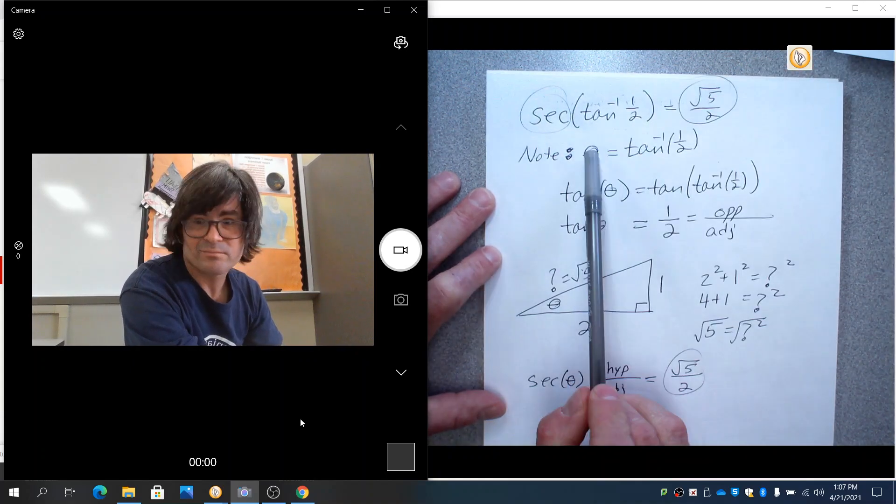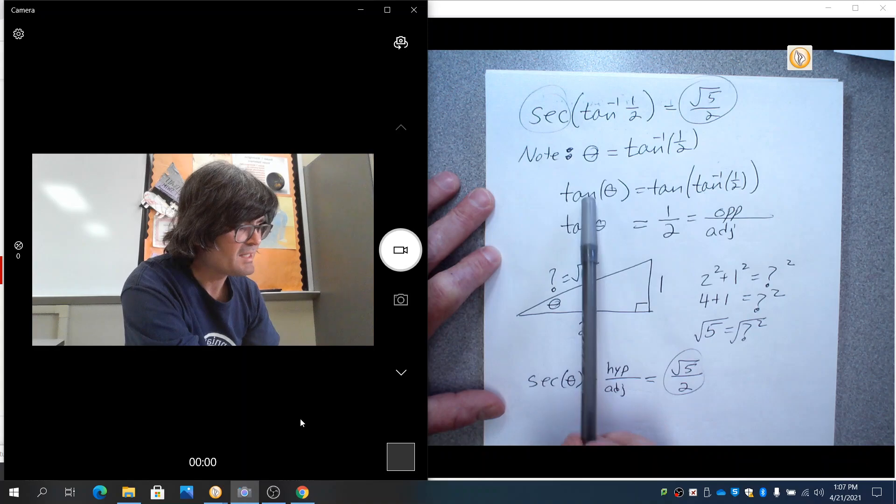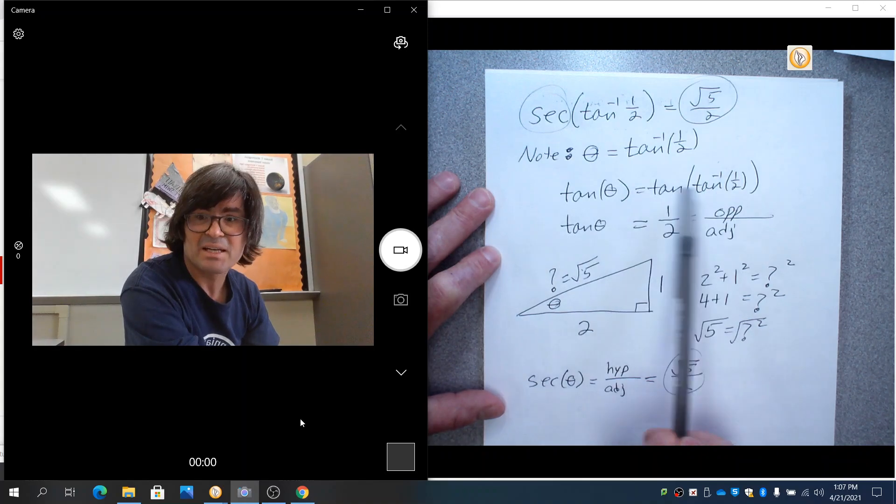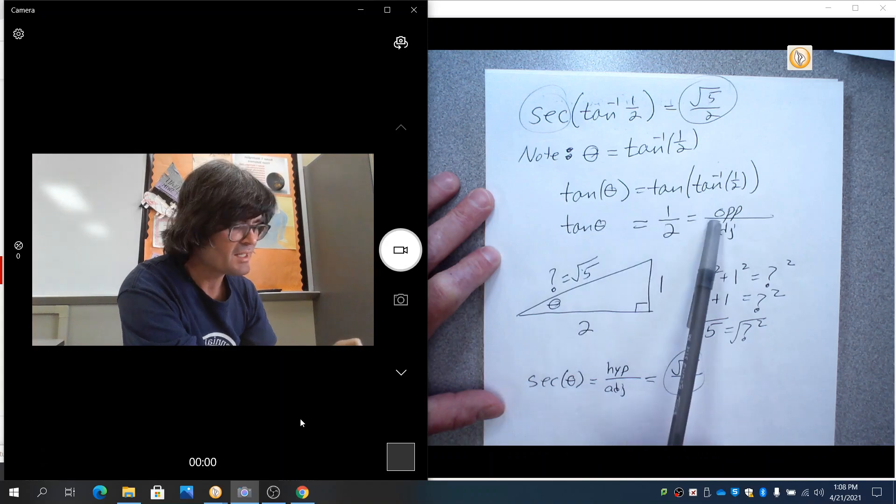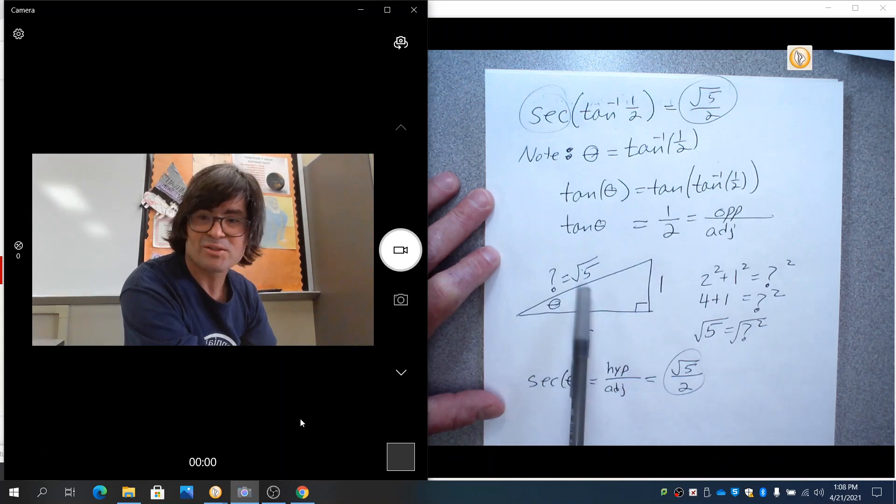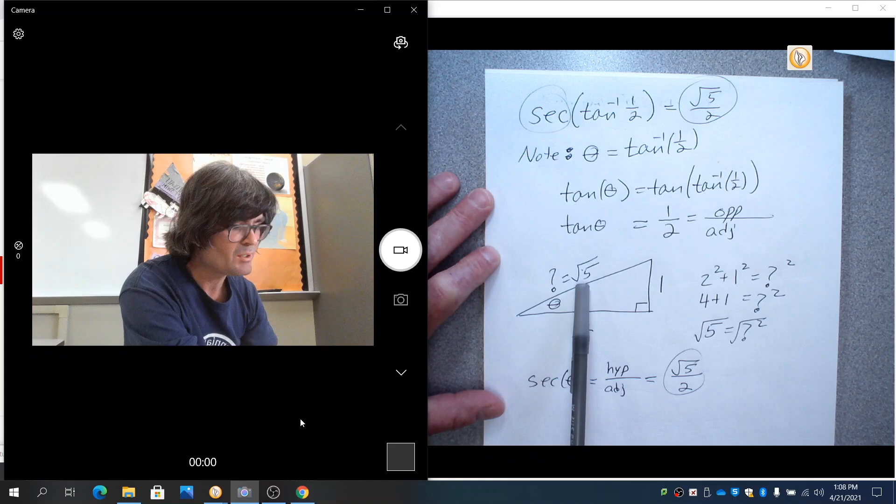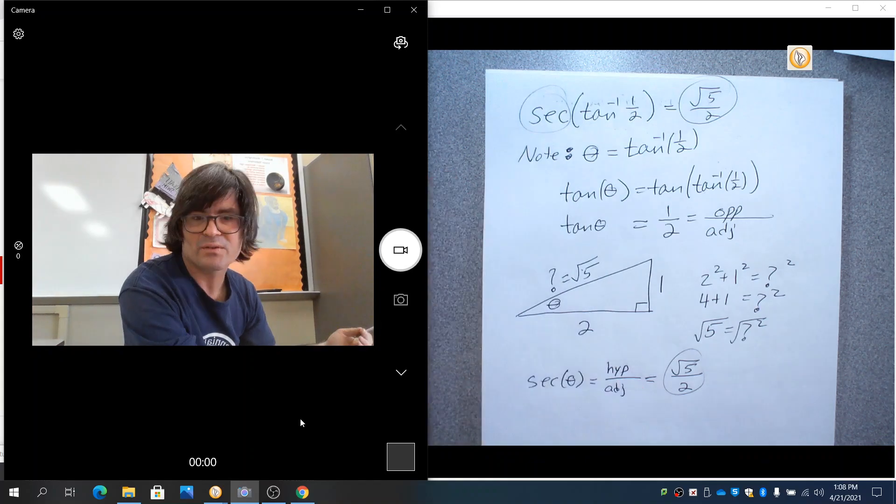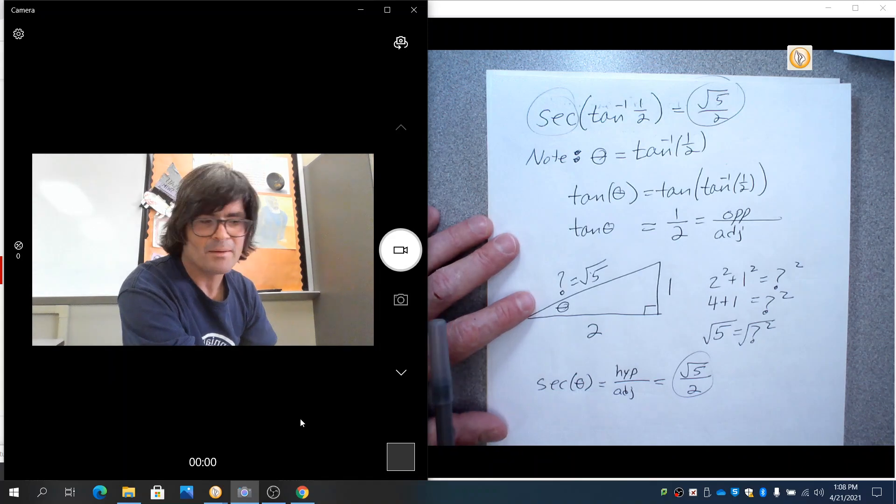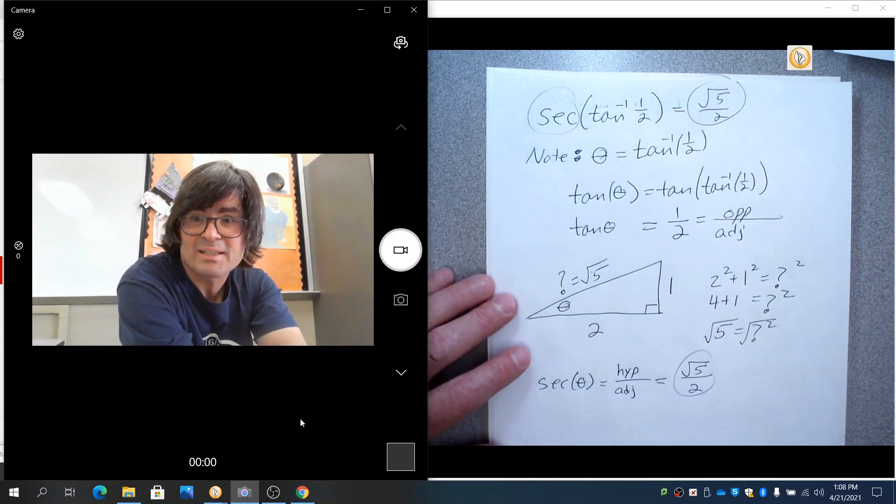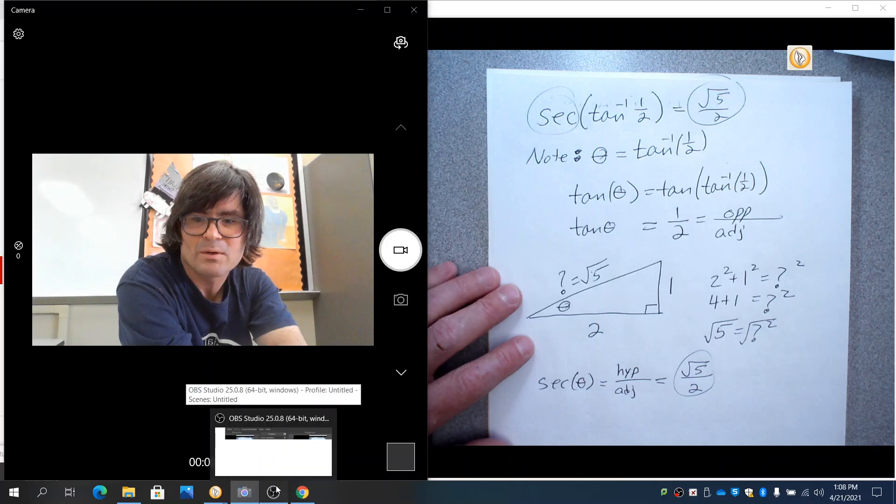Again, call this an angle. Theta works. Take the tangent of both sides to make this inverse tangent cancel out. And then you have tangent theta equals a number. Stick it on a triangle. Find the other side. Once you have all three sides, you can find the secant of that or any other trig function you want. And that's all there is to it. I hope this helps. Please let me know if there's anything else I can do to make this easier to work with.